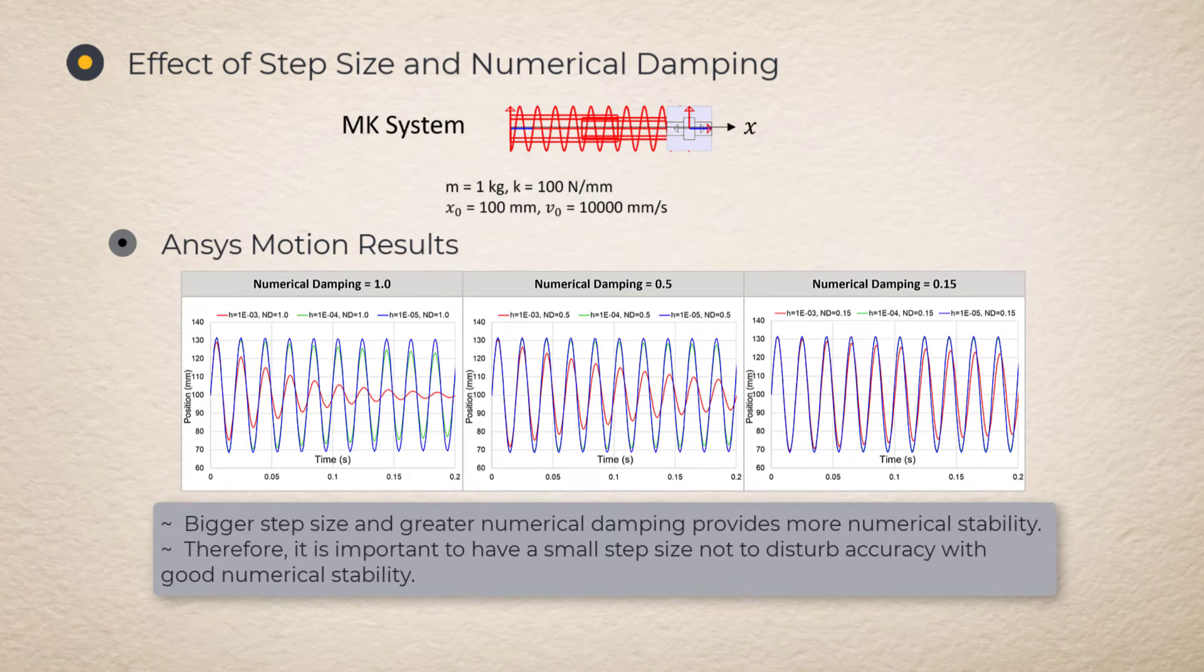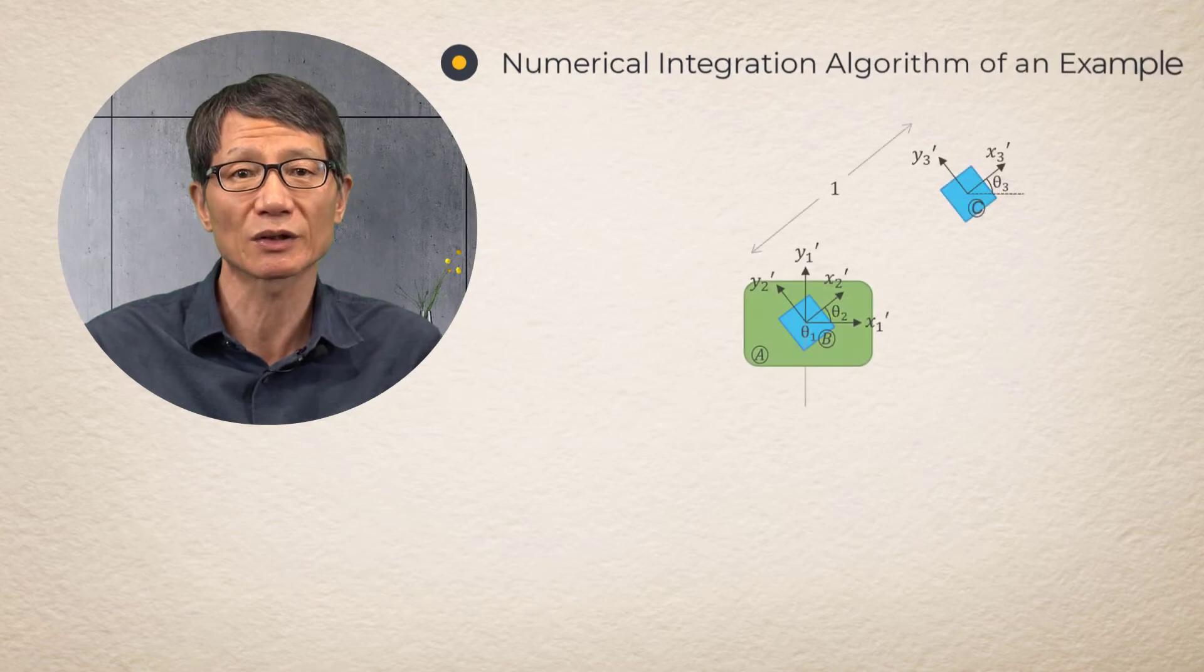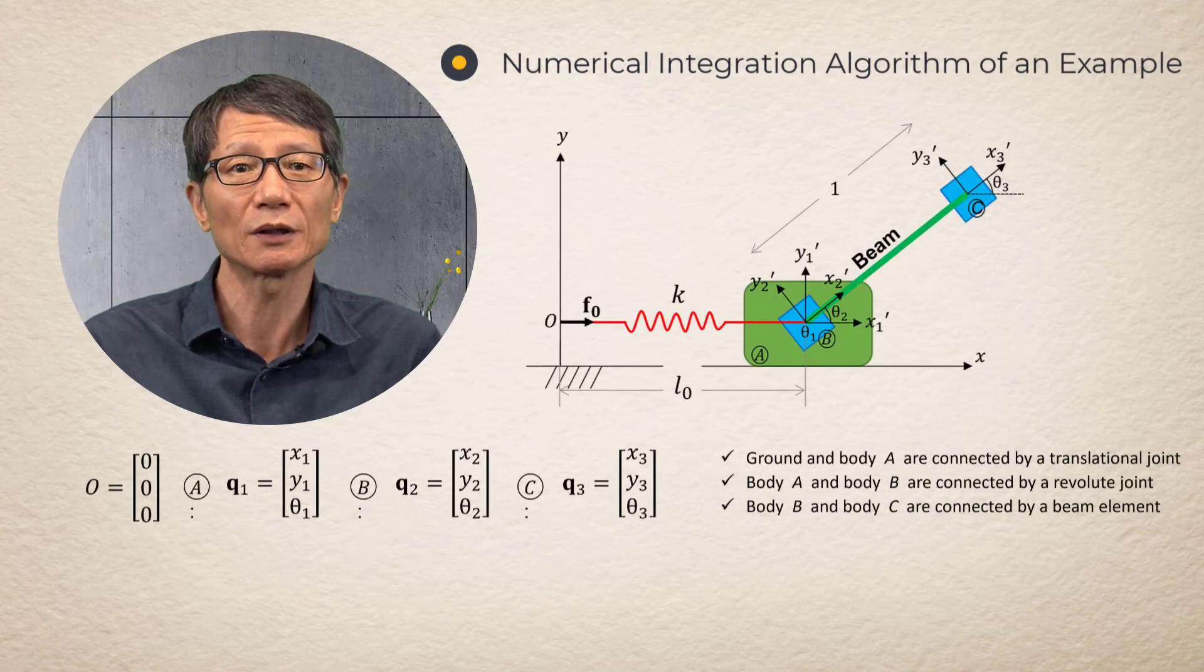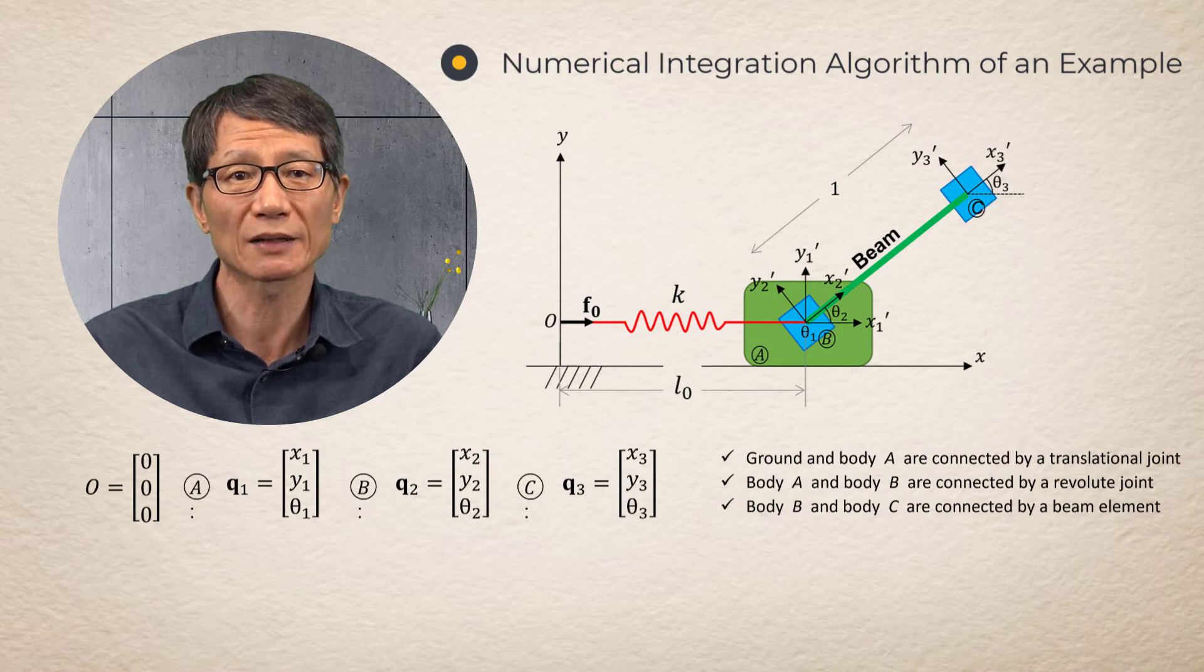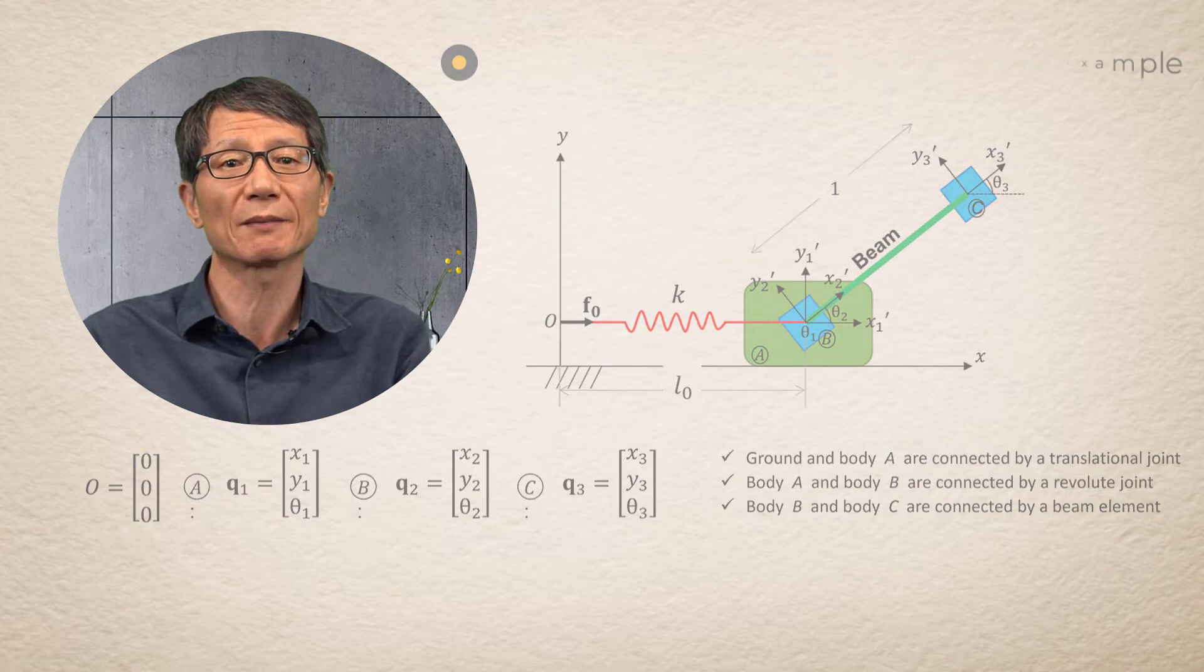As the numerical damping decreases, less numerical damping effects are shown with the large step size. Numerical Integration Algorithm of an Example. Let us take an example consisting of two bodies connected by revolute and translational joints, and one spring and one beam elements.